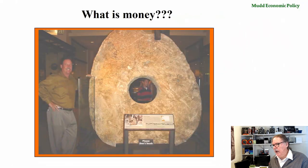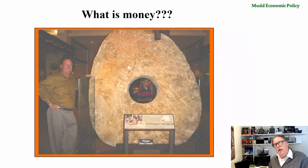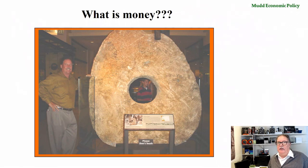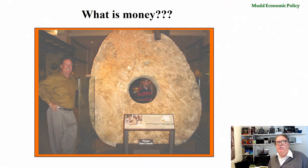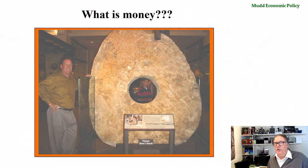We're going to start by asking the question: what is money? This is me at one of the Smithsonian museums many years ago, standing next to a coin — the Yap Islander coin. When I was young I read an interesting story about the Yap Islanders and this coin, and I was shocked to find it in the Smithsonian. It means that money is whatever you make it out to be — whatever satisfies the primary criteria of money that we all agree is money. There has to be a social consensus on what constitutes money, and that's what this story is about.